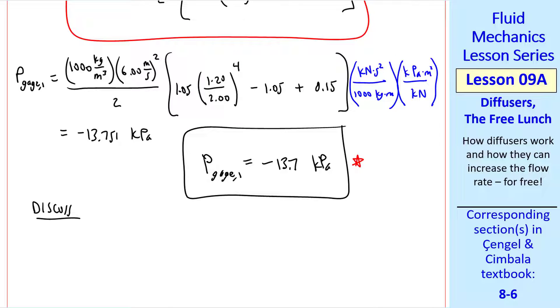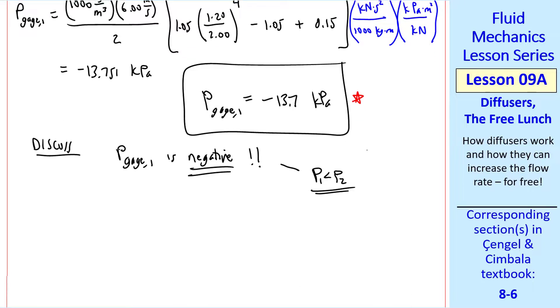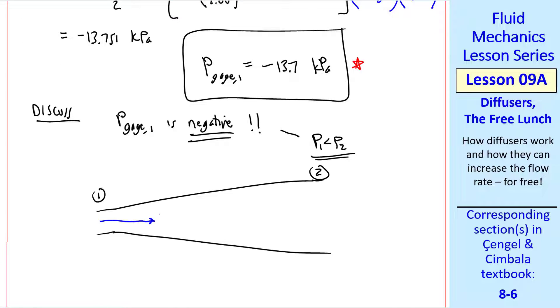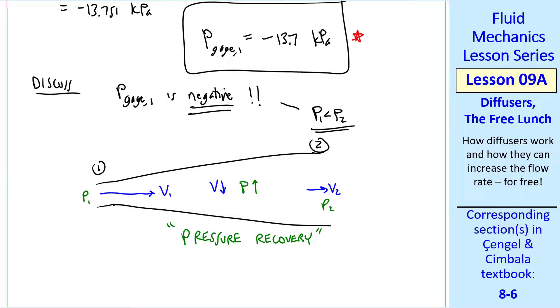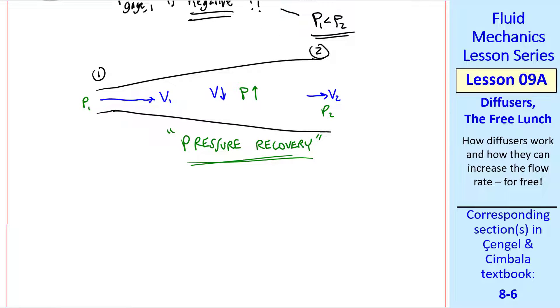We were also asked to discuss the results. We noticed that P gauge one is negative, which is what we've been saying all along for diffusers. As you go through the diffuser, V goes down, but P goes up. Engineers call this a pressure recovery as a result of the diffuser.